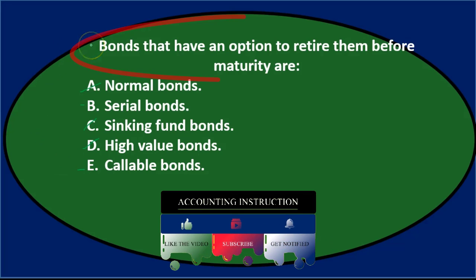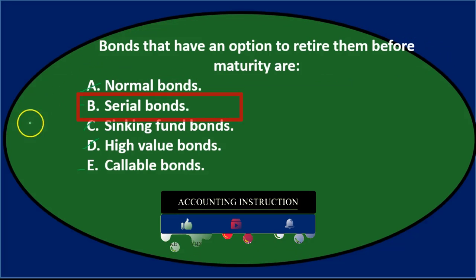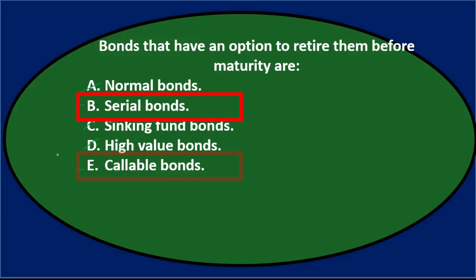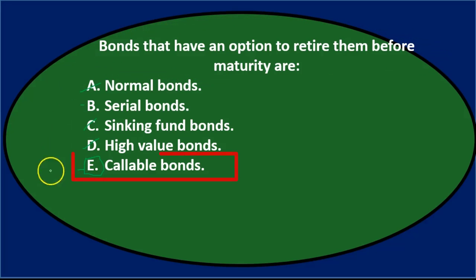Between serial bonds and callable bonds — serial bonds means there are multiple maturity dates. Callable bonds are the ones that can be retired before the maturity date is up; the issuer has that option. So bonds that have an option to retire them before maturity are E — callable bonds.